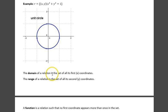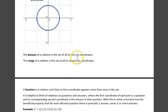The domain of a relation is the set of all of its first or x coordinates. The range is the set of all of its second or y coordinates.